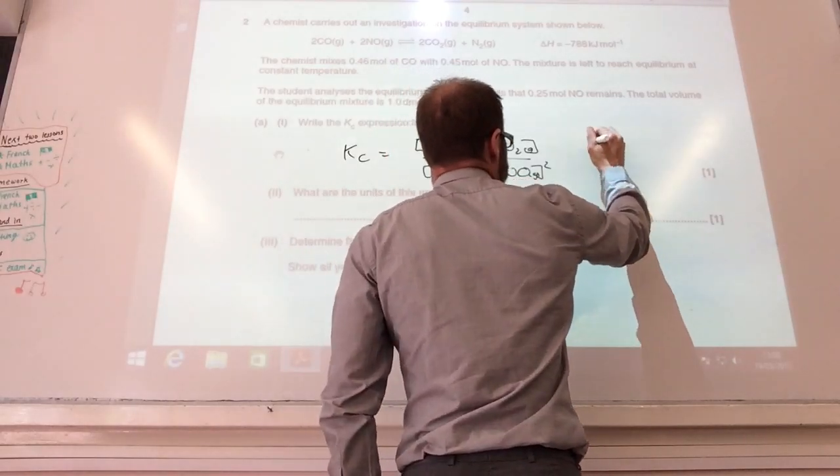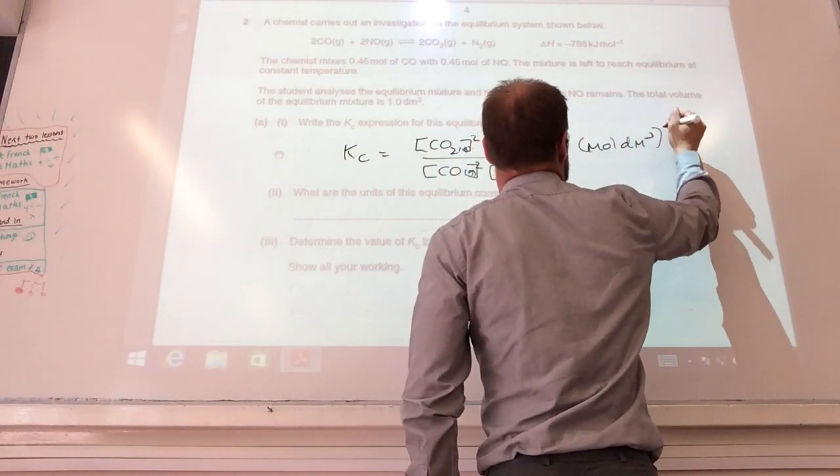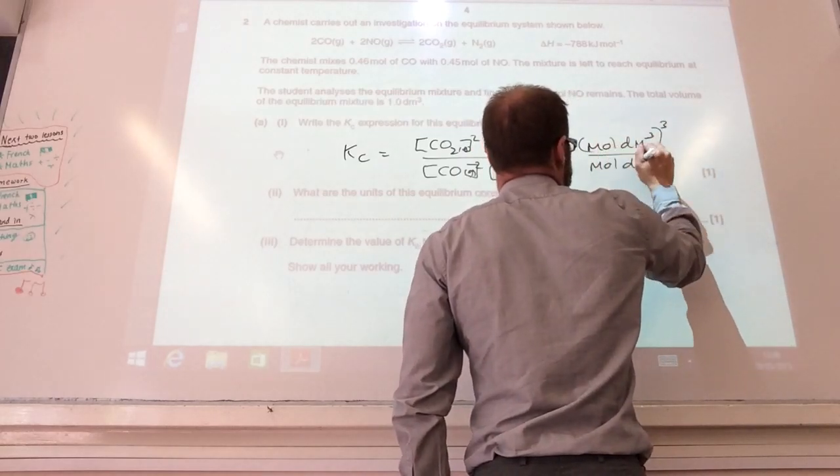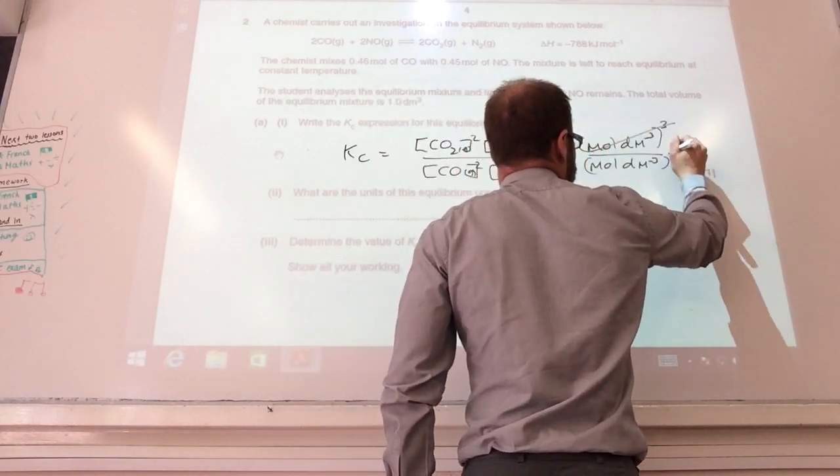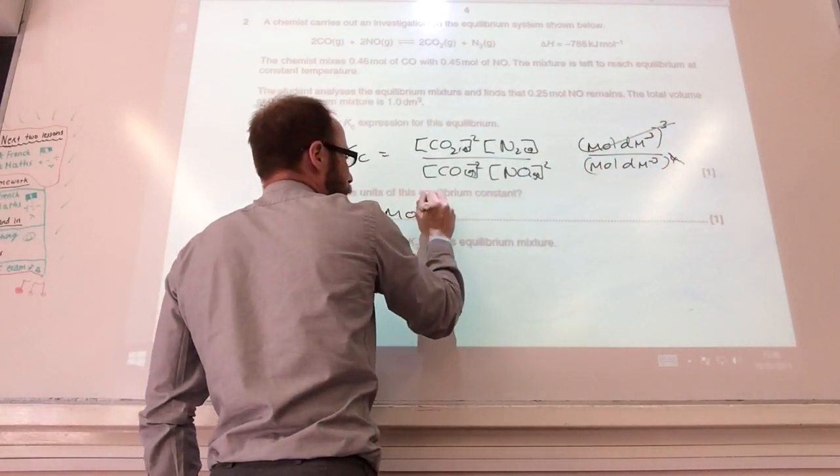Okay, well let's have a look. This is going to be mol dm^-3 and that's going to be cubed overall, mol dm^-3 to the power of four, so that's going to cancel with that, so you will end up with it being mol^-1 dm^3.